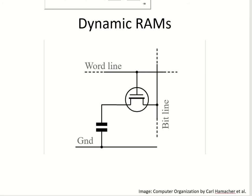Static RAMs are fast, but their cells require several transistors, so they are more expensive and require more space. Dynamic RAMs, in contrast, are less expensive and can have higher density since they require only a transistor and a capacitor.